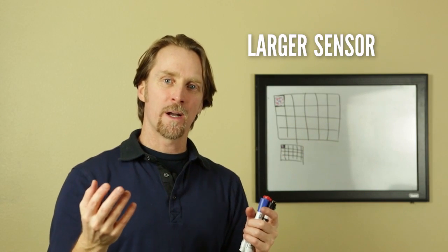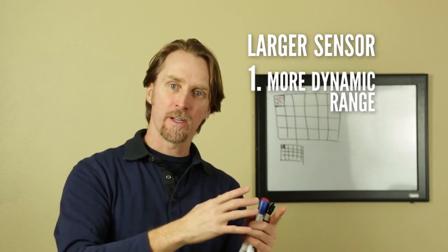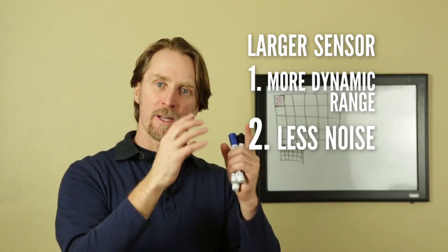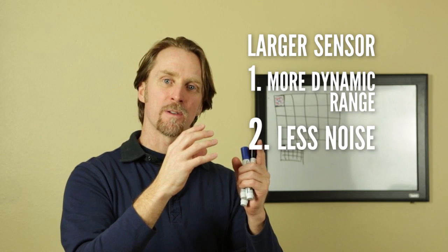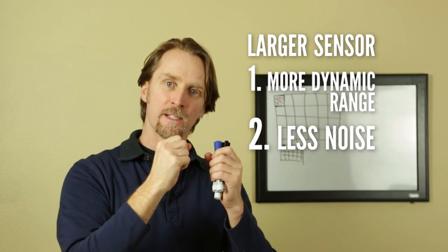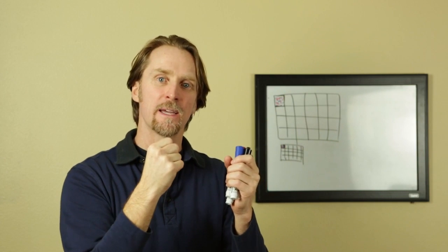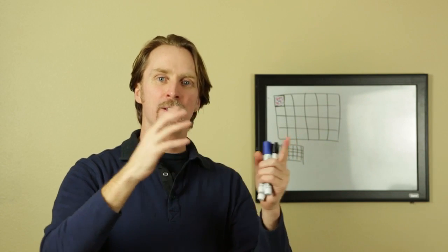One, the dynamic range is going to be better. You're going to get more range of light. And two, you're going to get a better signal and less noise. Because you're collecting a lot more of those photons, even though it's in lower light and there's not many to collect, with the large sensor, because it's magnitudes more information being captured by each pixel, you're going to get a much cleaner picture.